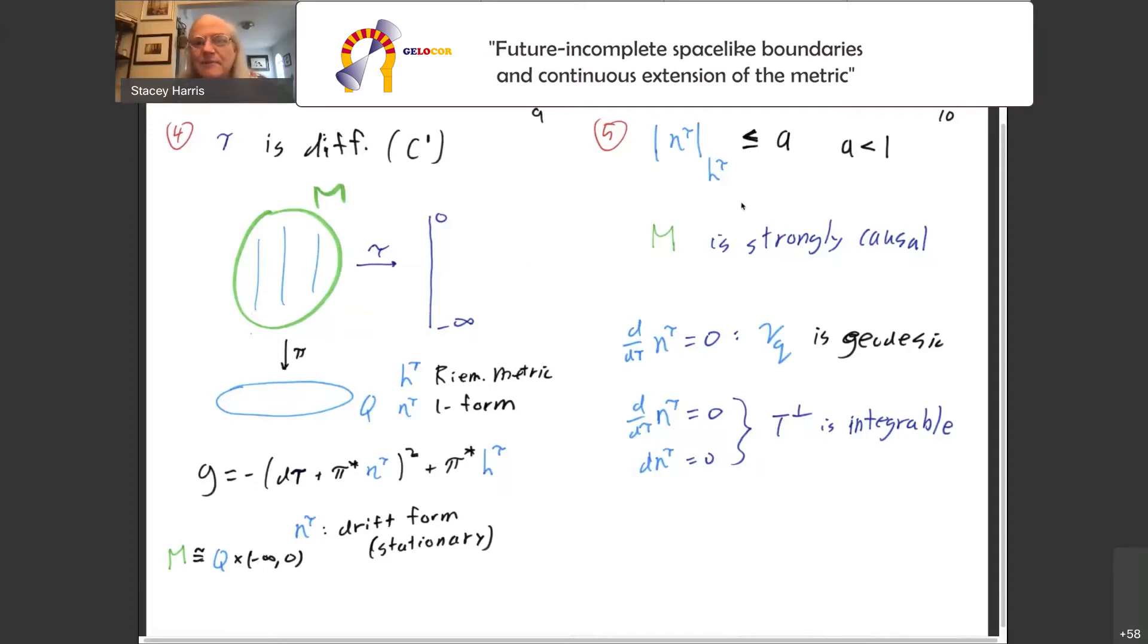The next assumption is that drift form can't be big. I want it to be globally bounded by some number less than one. How am I bounding h eta tau? I'm bounding it by h tau. Again, we have to remember, not only is my drift form time-dependent, so is my metric with which I measure it. This allows me to conclude that M is strongly causal.